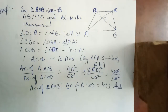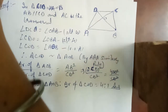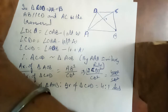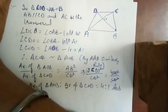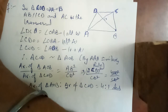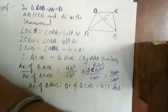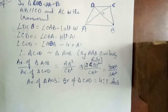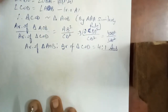Now, question number 3 is also a doubtful question. In figure 6.44, triangles ABC and DBC are two triangles on the same side of base BC. If AD intersects BC at O, we need to prove area(ABC)/area(DBC) = AO/DO. We will use a perpendicular construction to prove this.